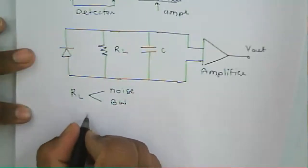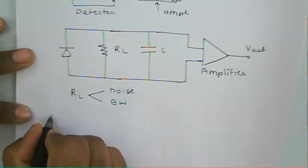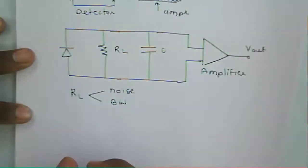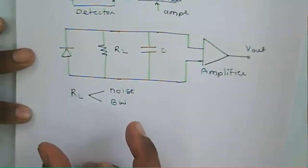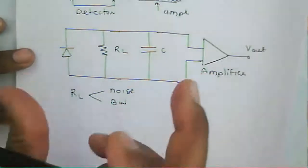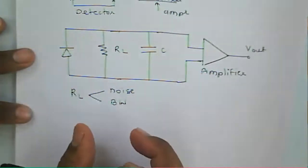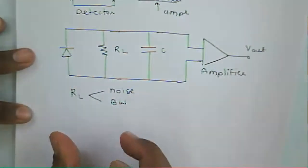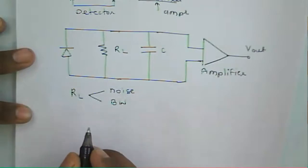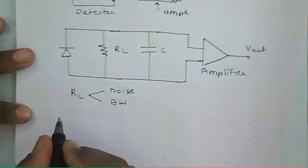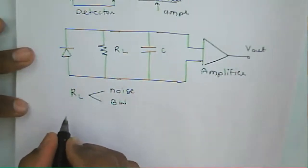For a given amplifier, the performance parameters of a receiver — bandwidth and noise — are totally dependent upon the load resistor.